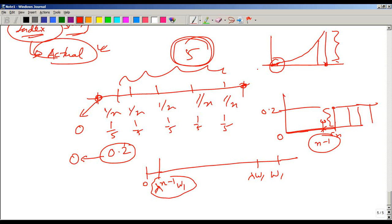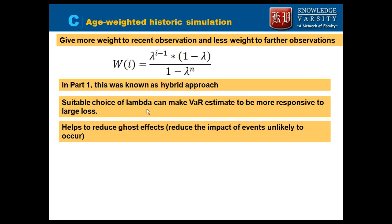As a result we say this is a much better approach than the plain historical simulation approach. Please note that the approach varies because you have to choose n - what is the sample size - and you also have to choose lambda. These are the two choices you as a modeler have to make. If you are able to take a suitable choice of lambda it can make this better.